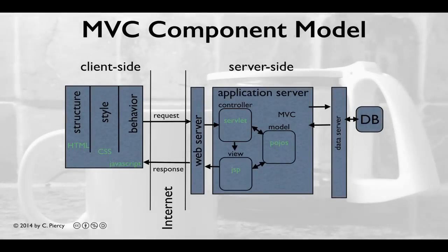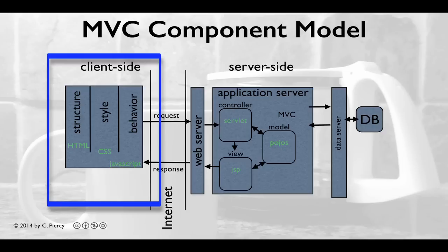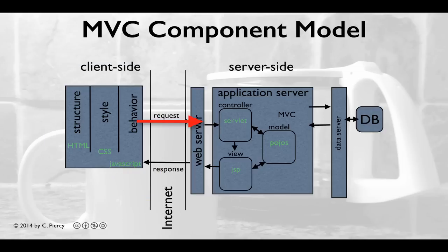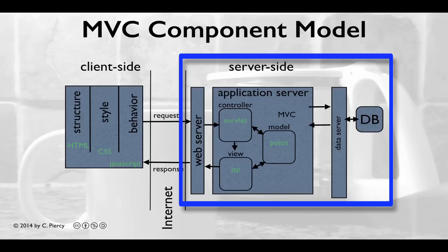In this diagram, we see the MVC component model for web applications. On the client side, we need technologies to handle the concerns of structure, style, and behavior. The client side would be something that would appear in your web browser. HTML could be used for structure, CSS for style, and JavaScript for behavior. Generally, something will happen on the client side that will cause a request to be sent to a server.